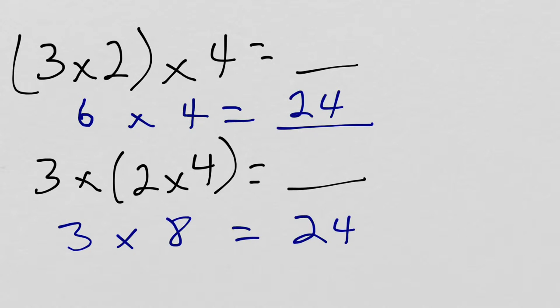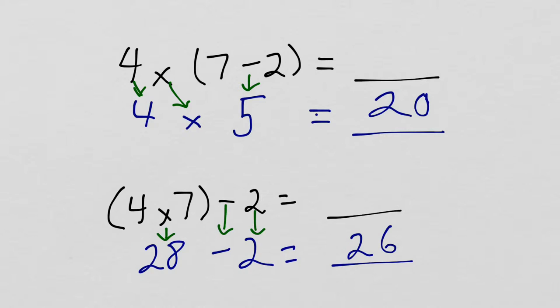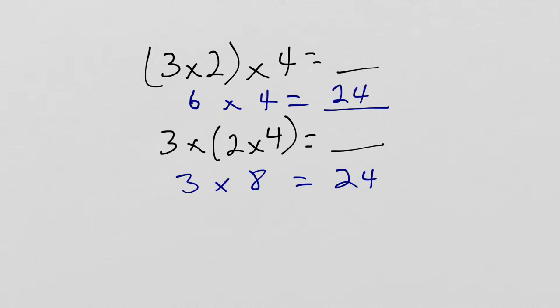Whoa, look at that. So what I'm seeing is that even though I moved the parentheses on this one, it's still 24 either way. That's because of the associative property of multiplication. Unlike the problem we just looked at, when it's all multiplication, it doesn't matter where the parentheses go. We can do it in any order. Multiplication is very special this way.